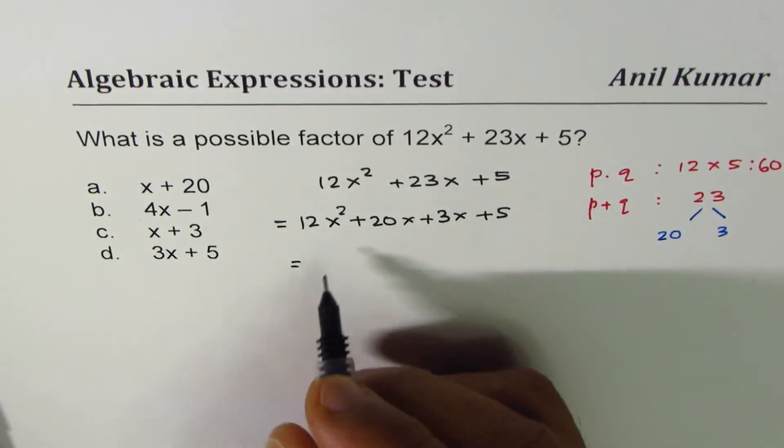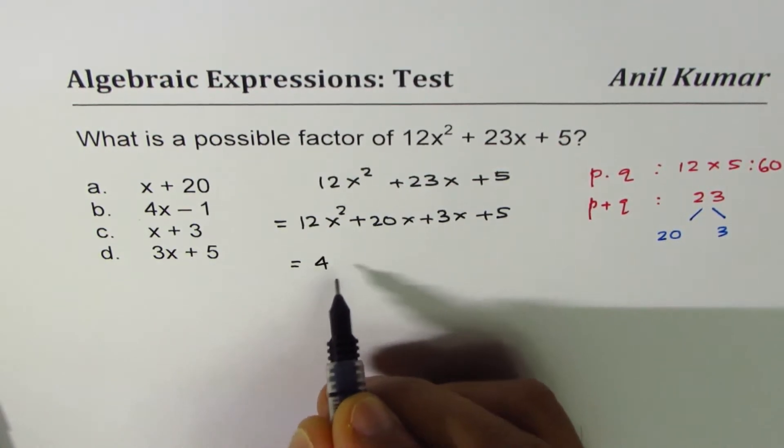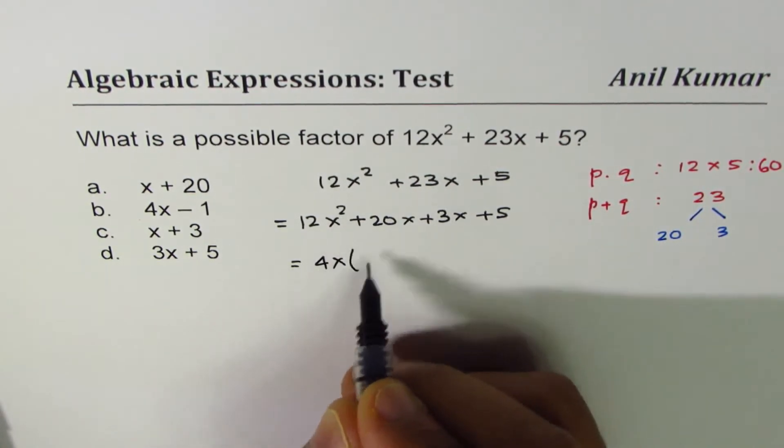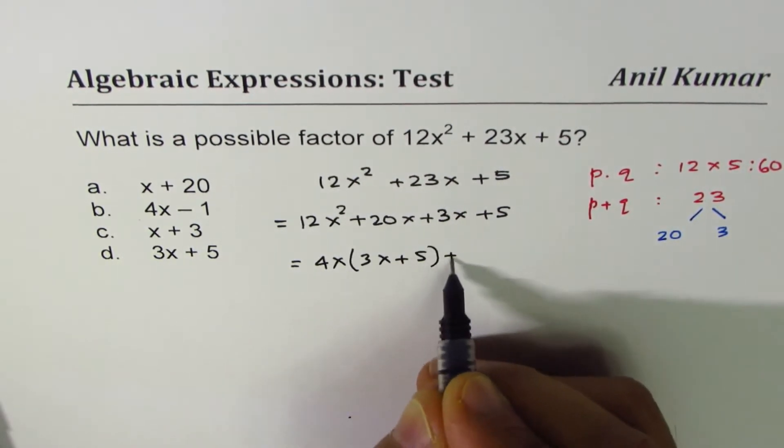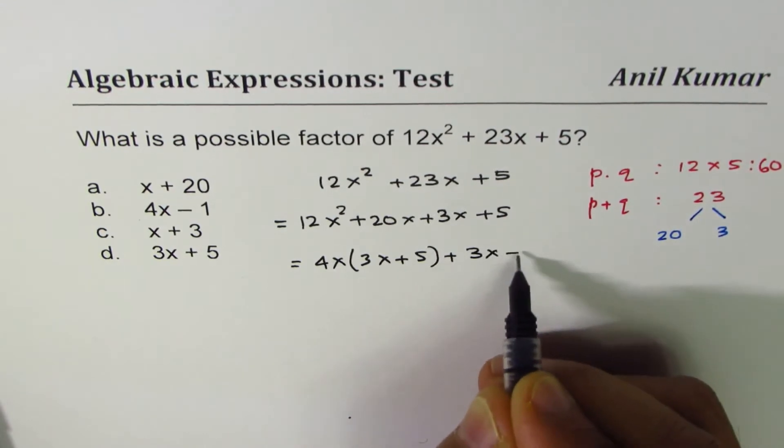Now, 12 and 20, the common factor is 4x amongst x squared and x. So we get 4x times 3x plus 5, and we already have 3x plus 5.